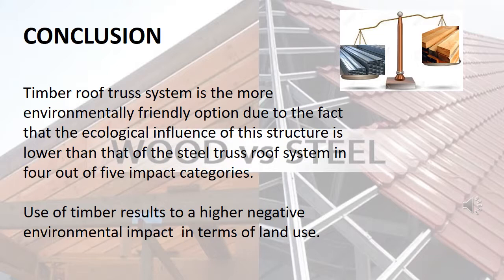Given that the construction industry is a major contributor in terms of significant impact over the Earth's ecosystem, the researchers consider that identifying and understanding the environmental effects of building materials represents an important step in the design process of a structure. From the performed analyses, taking into account the five considered environmental parameters, we can conclude that the timber roof truss system is the more environmentally friendly option, as its ecological influence is lower than that of the steel truss roof system in 4 out of 5 impact categories. However, considering that forests have a critical function in sustaining life, using wood as a construction material can substantially influence the natural environment in a negative manner, as evidenced by the higher negative impact of timber in terms of land use.